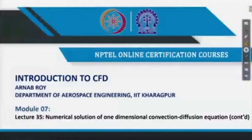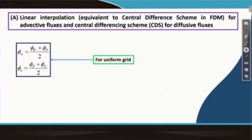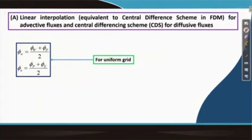We continue our discussion on Numerical Solution of 1-Dimensional Convection Diffusion Equation. Last time we started our discussion on linear interpolation and we will continue the discussion on that now. We recall that we looked at the scheme for different boundary nodes as well as internal nodes, and we continue to look at the formulation for that.